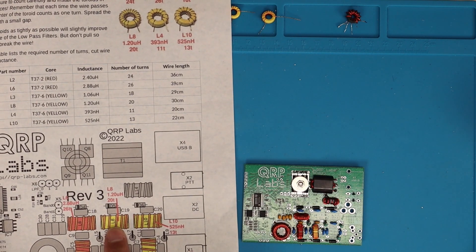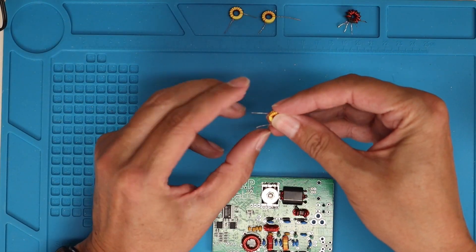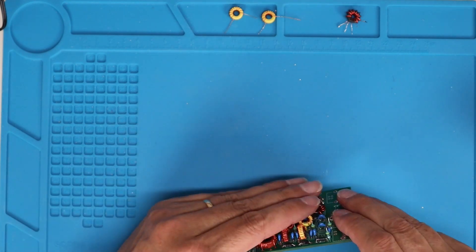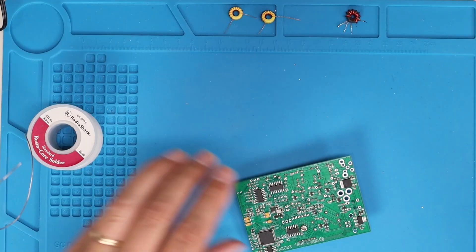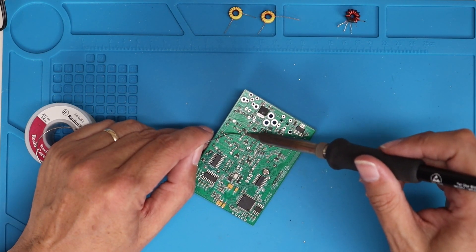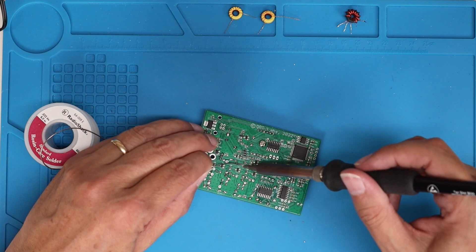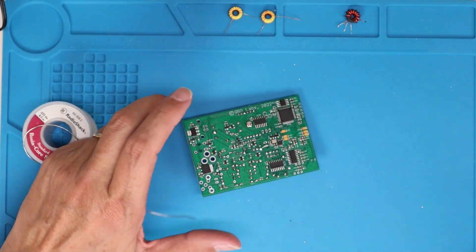The next we're going to do is L7, which is the other inductor for 40 meters. Now I try and get these as tight to the board as I can, but that's not critical. You don't have to have it super tight, and I would be careful on pulling on these rather small wires that you don't break them. You don't want to have to go and rewind a toroid.